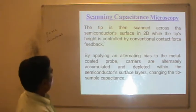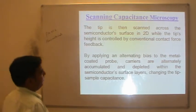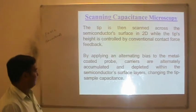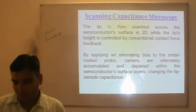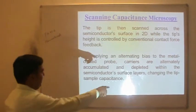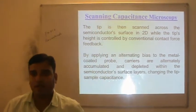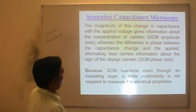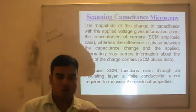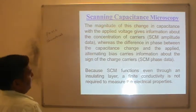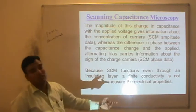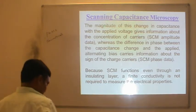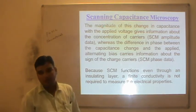The tip is then scanned across the semiconductor surface in 2D while the tip's height is controlled by conventional contact-force feedback. By applying an alternating bias to the metal electrode, charge carriers are alternately accumulated and depleted within the semiconductor surface layer, which changes the tip-sample capacitance — measurable by lock-in amplifiers. The magnitude of the change in capacitance with applied voltage gives information about the concentration of carriers — whether p-type or n-type.